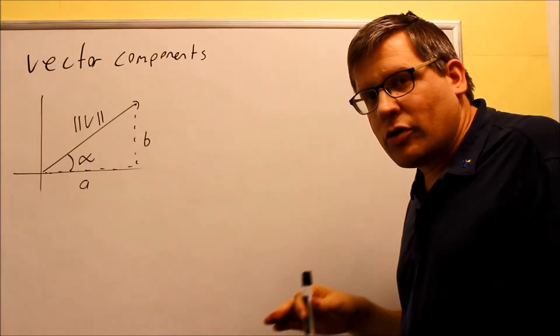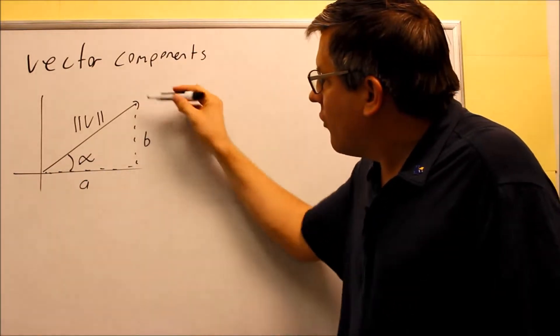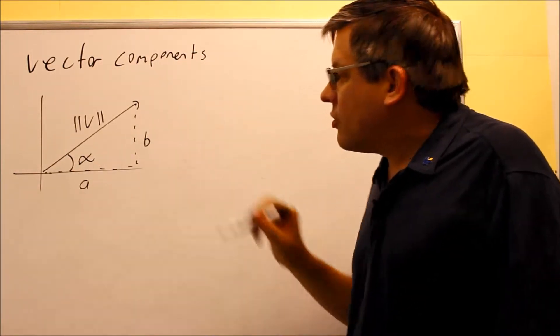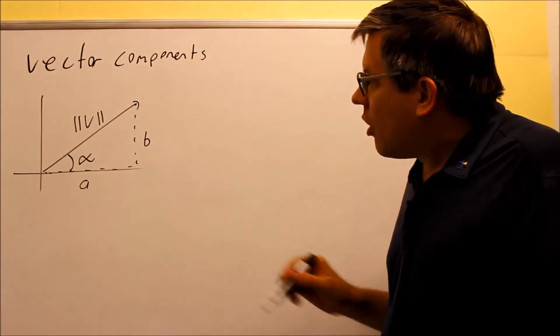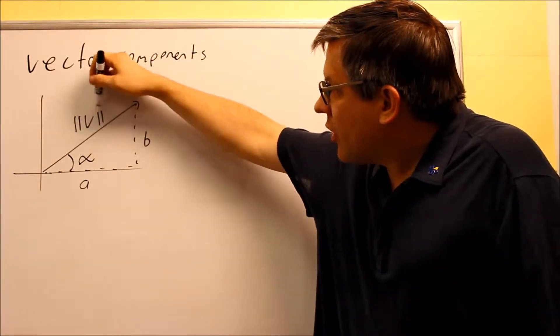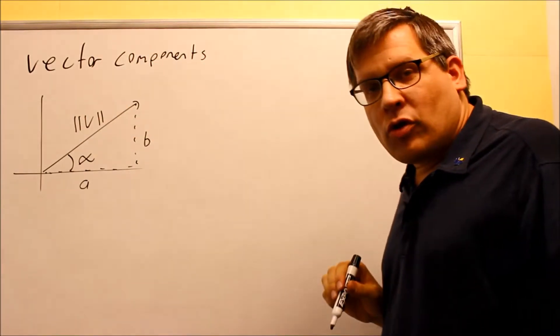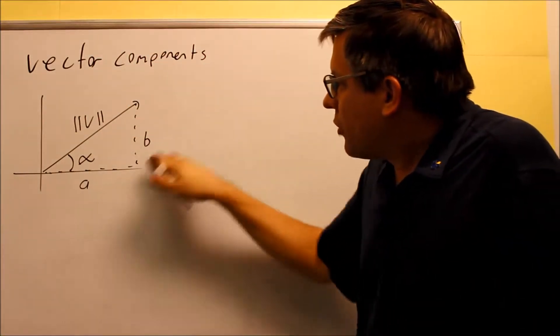This is something that's going to be important for those of you going on to physics. You want to find a way to take that vector and separate it into A and B components there. So all you need is the magnitude, how much strength there is or how long the vector is. And if you have the angle that the force is going at, you'll be able to break it up into components.